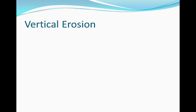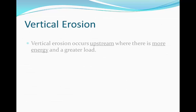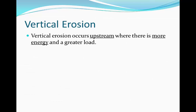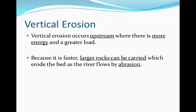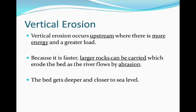Vertical erosion is the erosion of the river bed and occurs upstream where there's more gravitational potential energy and a greater load. Bigger and faster rocks are carried down the river, abrading the channel bed as the load scrapes against it, making it even deeper. As a result the river mainly concentrates on the middle of the channel — moving faster and straighter — so lateral erosion is minimal and vertical erosion happens at a faster rate.